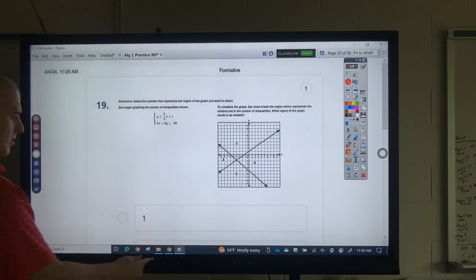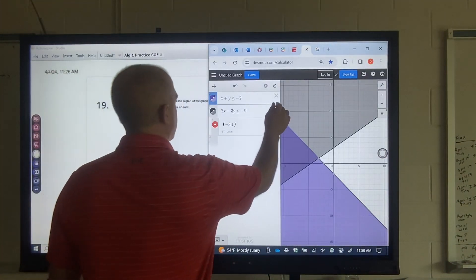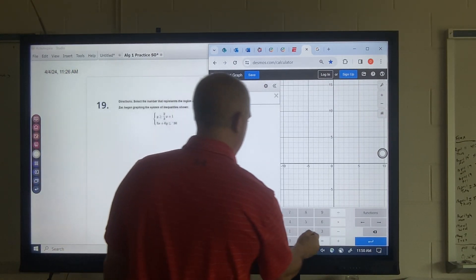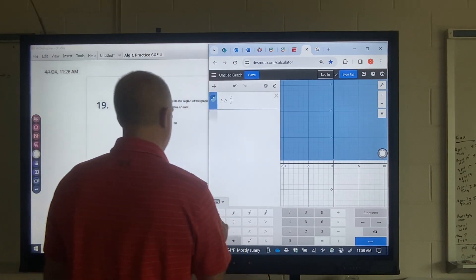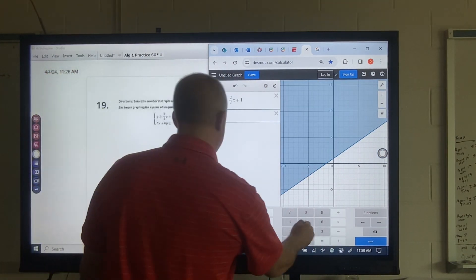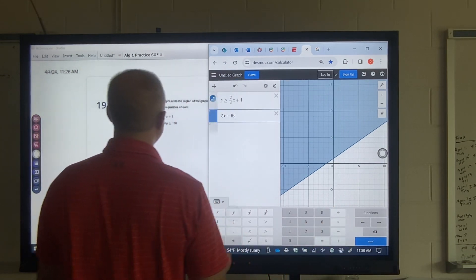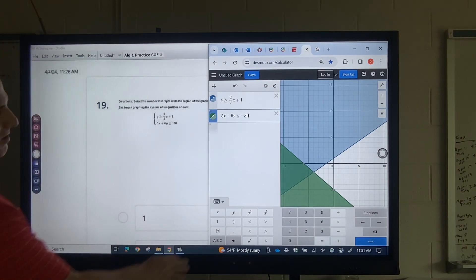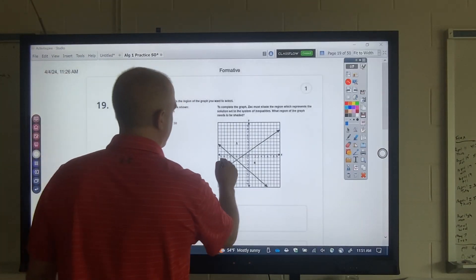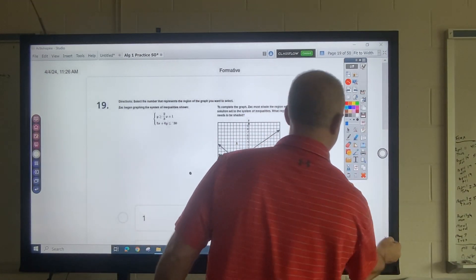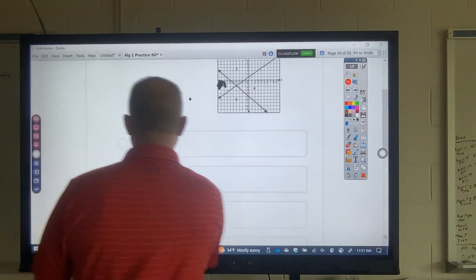Same deal. We're looking for the darkest area. Okay. Y greater than or equal to 2 divided by 3. X plus 1. 5X plus 6Y less than or equal to negative 30. Okay. So the darkest area is this little piece here. So that's answer, if you're circling that, that'd be answer 2. Okay.